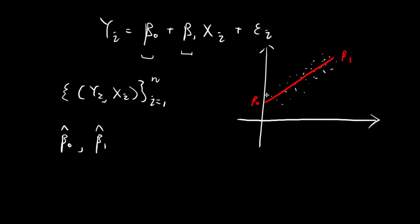Once we obtain the estimates, you would expect the line to probably look something like this. This line here would have an intercept of beta0-hat and a slope of beta1-hat. Your estimate could be extremely good, such that your estimates turn out to be exactly beta0 and beta1 itself — in that case, this white line would coincide with the red line entirely. But usually in most cases, you would expect there to be some slight deviation.